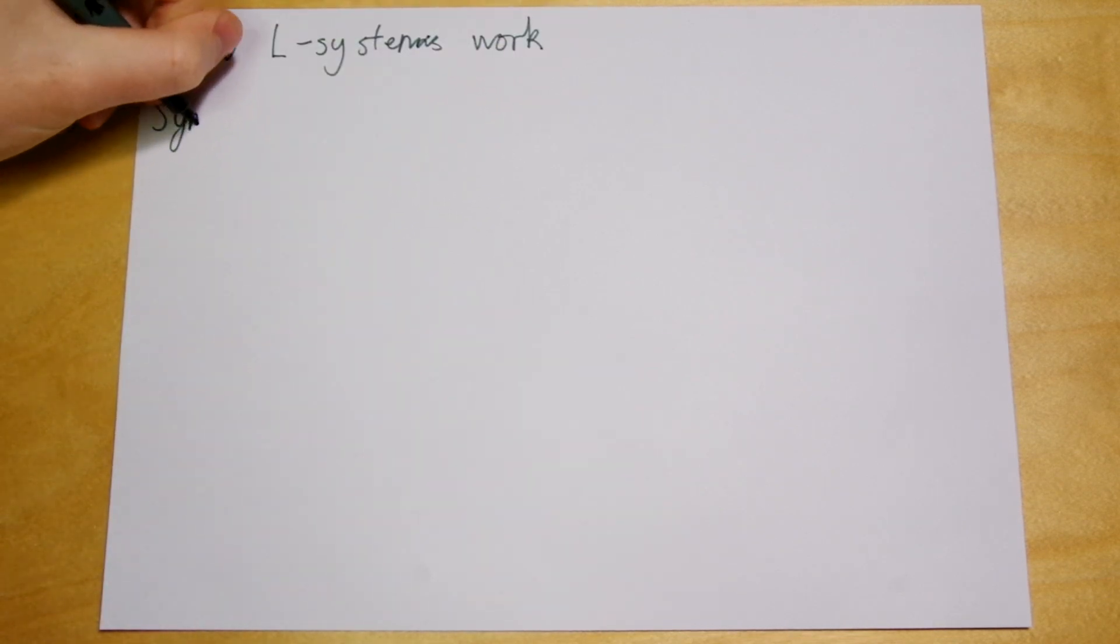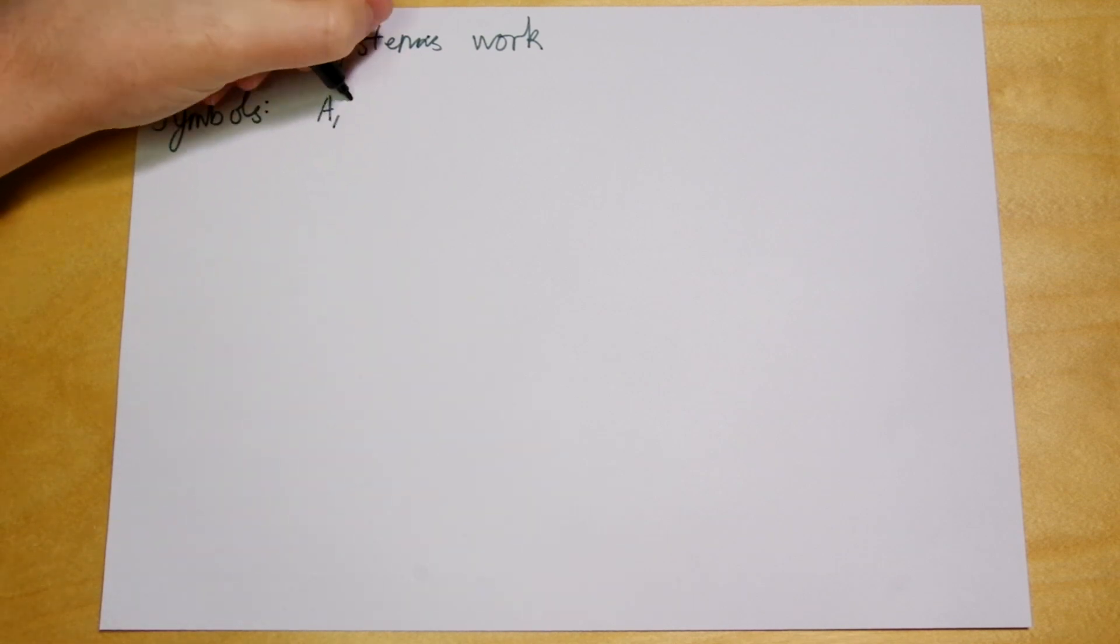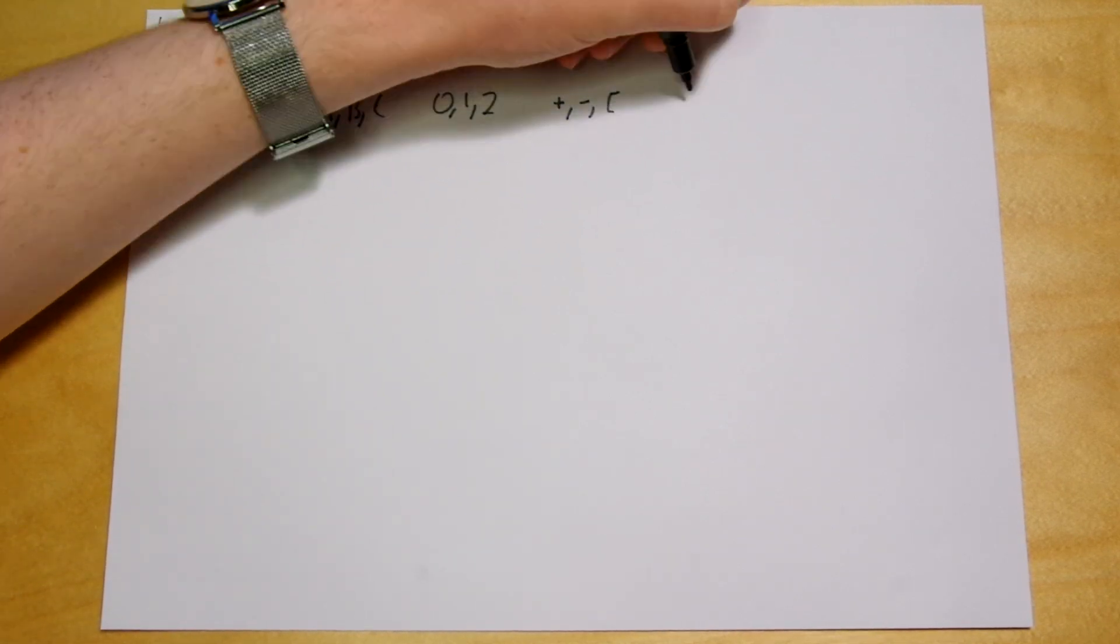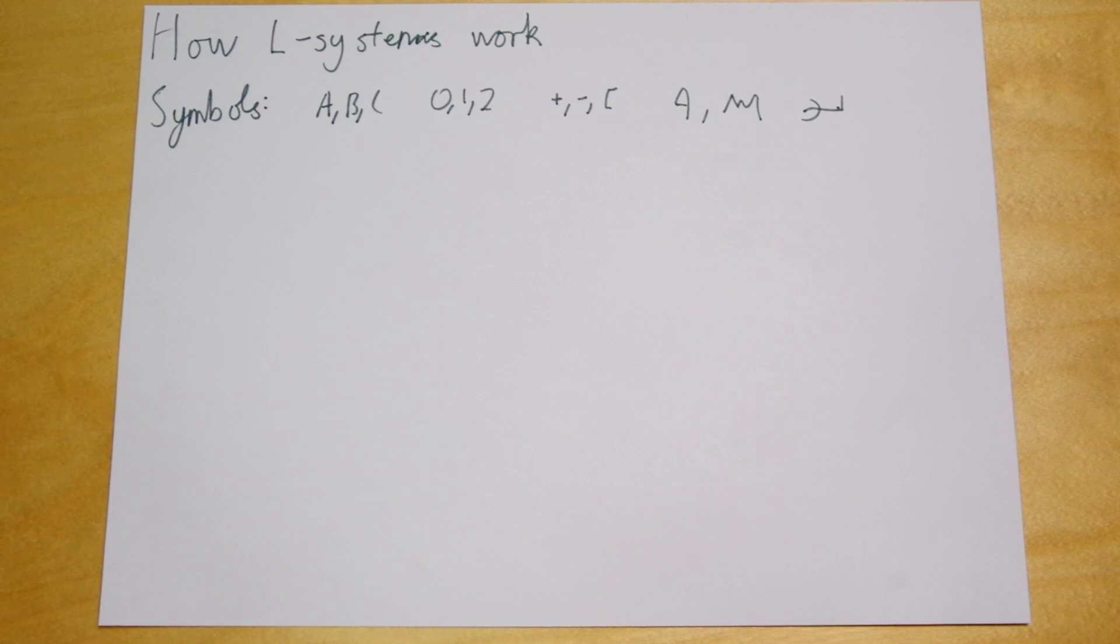Since then he and others have developed this idea, first applying it to produce drawings of plants as well as a variety of mathematical objects. But before we take a look at these, we need to explain how Lindenmayer systems work. The building block of an L system is a symbol. These could be letters, numbers, punctuation, even hieroglyphics, but we'll stick to just letters and punctuation for simplicity's sake.